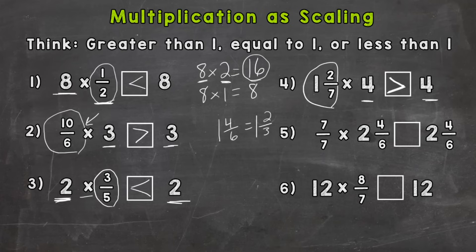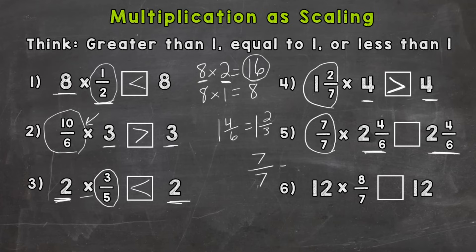Number 5. We have 2 and 4 sixths on each side. On the left-hand side, we're multiplying by 7 sevenths. We have the same number in the numerator and the same number in the denominator — 7 sevenths actually equals 1 whole. So we're multiplying 2 and 4 sixths by a whole, meaning 1 times 2 and 4 sixths is going to be equal to 2 and 4 sixths.